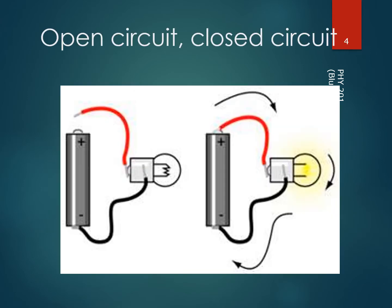In the picture shown on the left, it is an open circuit — the red wire is not connecting to the battery, it is not a closed path, so no current is flowing and the light bulb is not lit. On the right side of the picture, when the red wire does connect to the battery, there is a closed circuit, so current flows through the light bulb and the light lights up.